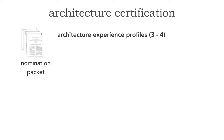The nomination packet contains several things. First, you have to fill out architecture experience profiles. You'll need a minimum of three of these, which use a provided template to demonstrate your experience as an architect. You can't get certified unless you have been acting as an architect on at least three projects. You fill out what the problem was, what your architectural solution was, what the trade-offs were, and the lessons learned.